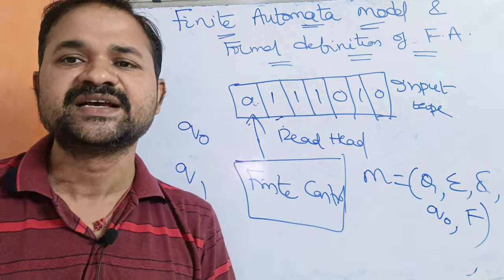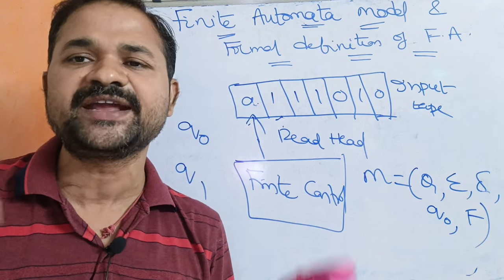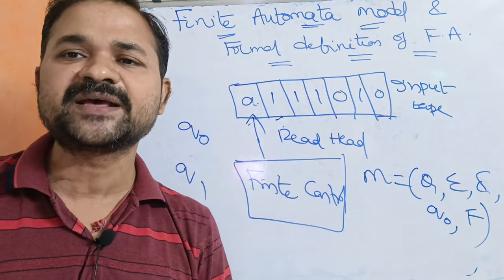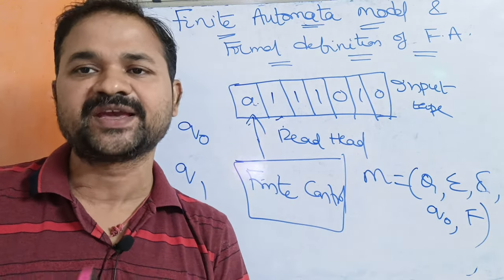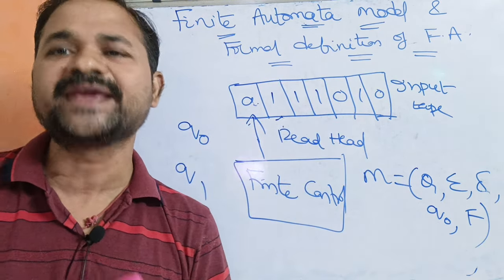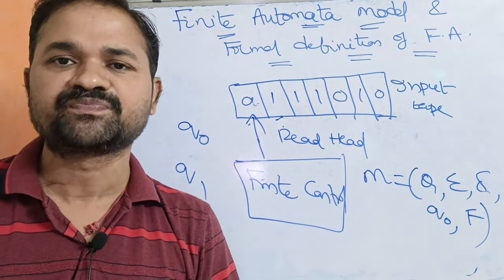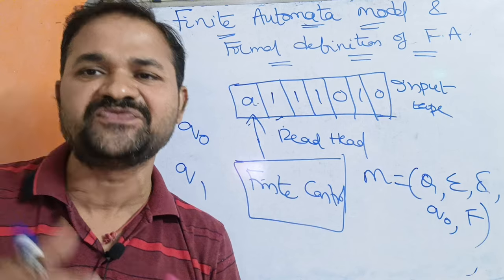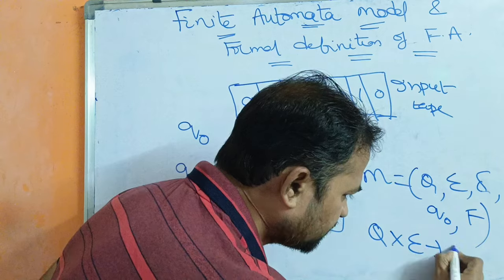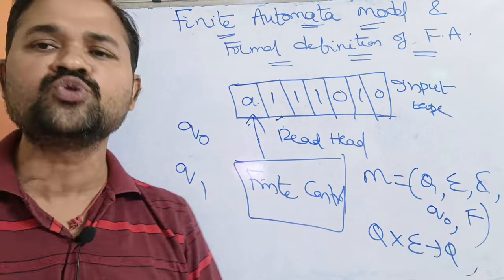Q represents the set of states. Let the transition diagram contain five states, so Q represents all those states. Sigma represents the input alphabet, which may contain 0 and 1, or A and B. Delta is a transition function which maps from Q cross sigma to Q.